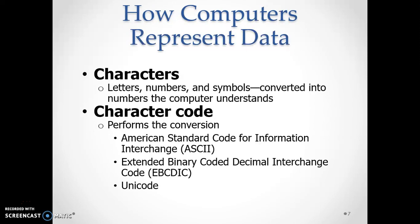Symbols na nambari zinabadilishwa kuwa binary digits kupitia kitu kinachuitwa character code. Kuna character codes mbalimbali: kuna ASCII — American Standard Code for Information Interchange — pia kuna EBCDIC — Extended Binary Coded Decimal Interchange Code — ambazo zinasaidia kubadilisha symbols kuwa binary digits. Pia tunayo Unicode. Kompyuta inapokea data, inabadilisha kila kitu kuwa binary digits.